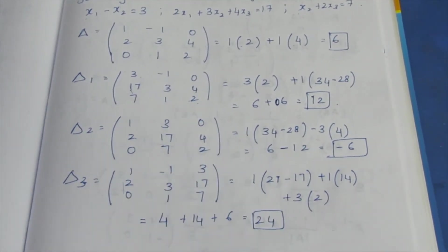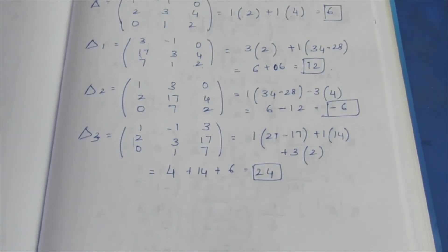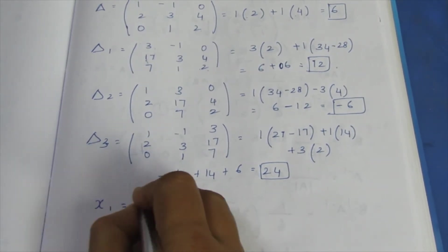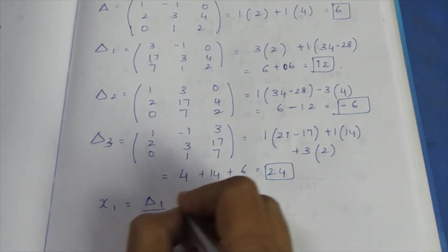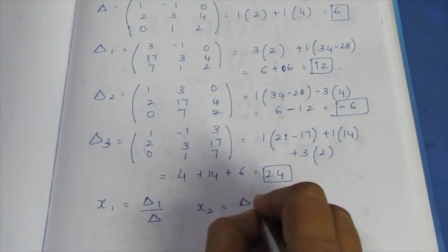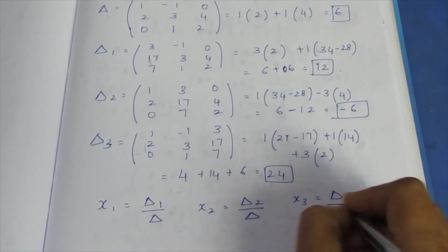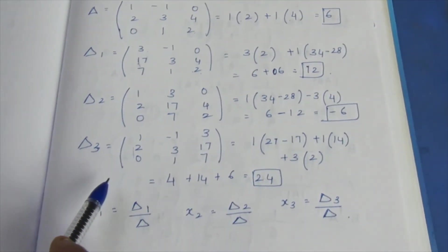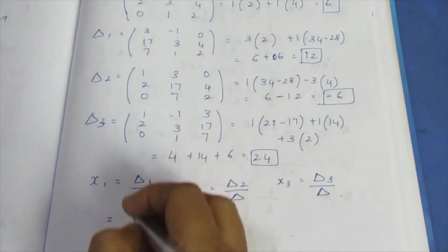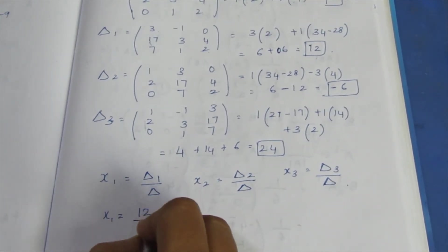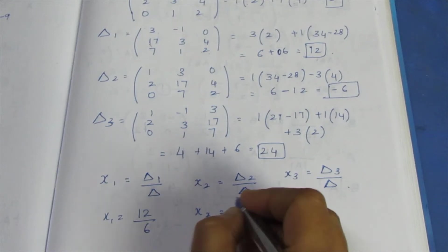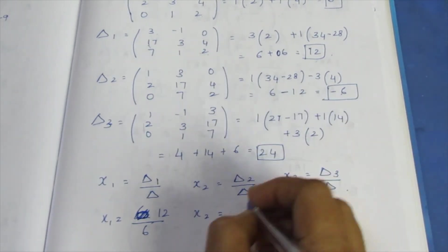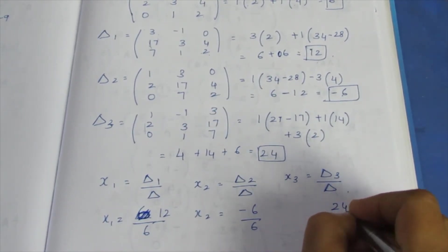So determinant D3 is defined. Now by Cramer's rule: x1 equals D1 divided by D, x2 equals D2 divided by D, x3 equals D3 divided by D. The determinant value D is 6. So x1 is 12 divided by 6, x2 is minus 6 divided by 6, and x3 is 24 divided by 6.